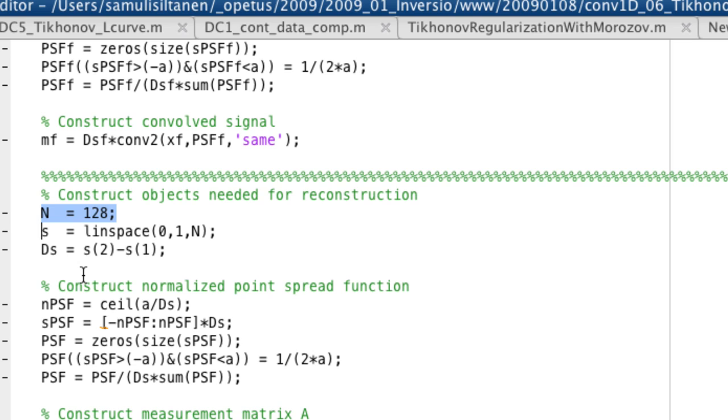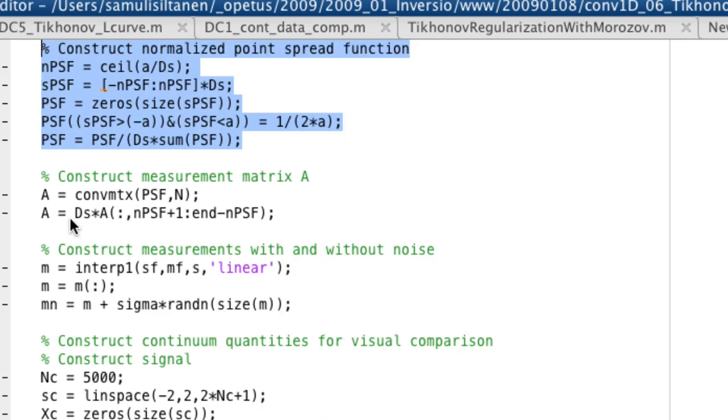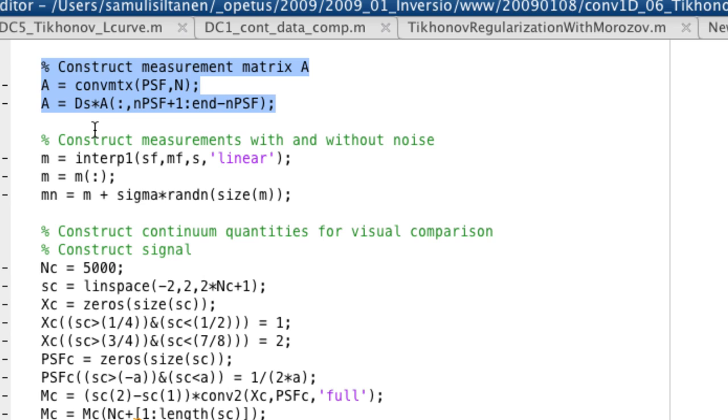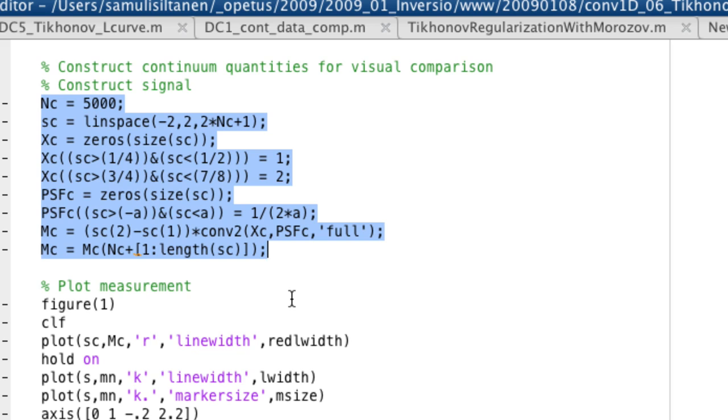Then here we choose the dimension of our unknown in the computational model. We construct the same point spread function on that resolution. Here is the measurement matrix where I think I'm doing some kind of shape. Yeah, so it becomes a square matrix. Then we make interpolation from the fine grid signal and add some noise as we did this year as well.